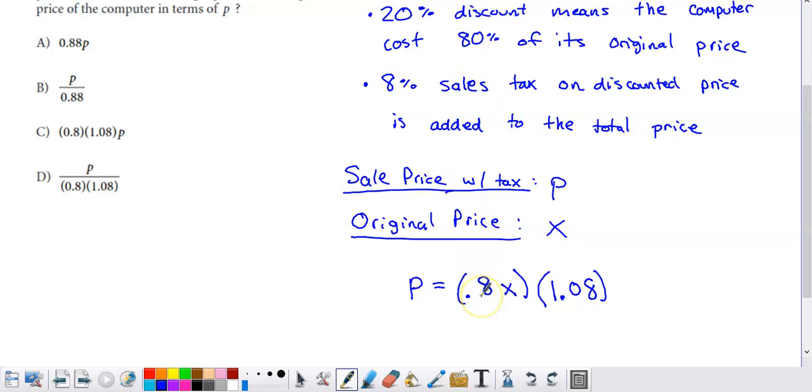So I paid 0.8, right, the decimal version of 80% times the original price. This was the sale price. But then I paid tax on top of that.